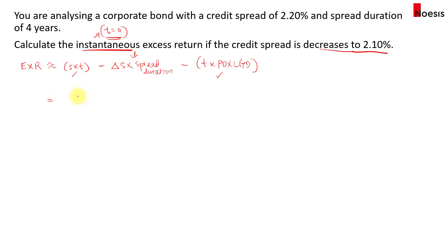So this will just be negative times the change in the spread, which is 2.1% minus 2.2%, then multiplied by 4. Since the spread decreased, there will be a positive excess return of 0.4%. So we can expect that positive excess return instantaneously from the change in spreads.